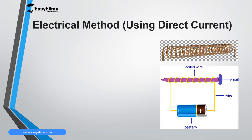For the electrical method, we use direct current (DC). We have two types of current: direct current and alternating current. Alternating current moves in different directions, which would make the dipoles face in all directions and would not help us. So we use direct current, which moves only in one direction — and when it moves in one direction it will orient the dipoles in a common direction.